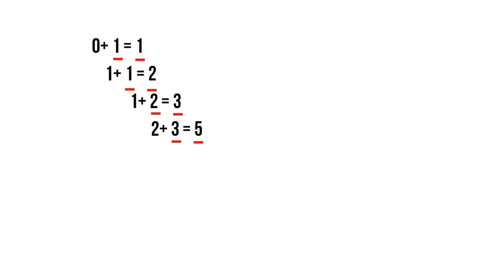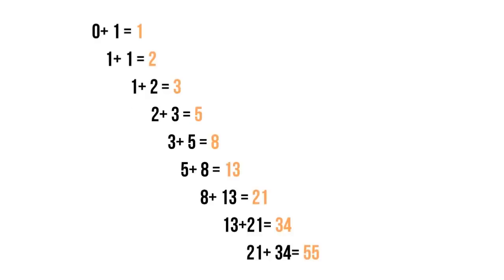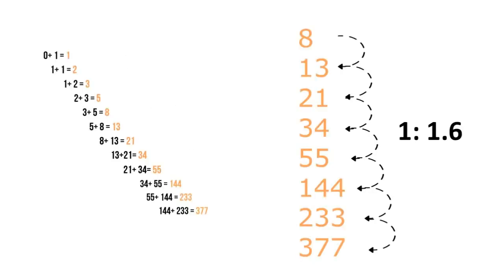It's around this point that the ratio actually starts showing up. As we continue this formula, we start arriving at a set of numbers: 2, 3, 5, 8. We're adding the sum of the equation to the last number in the equation. This sequence and ratio remains consistent no matter how long you follow this mathematical formula.